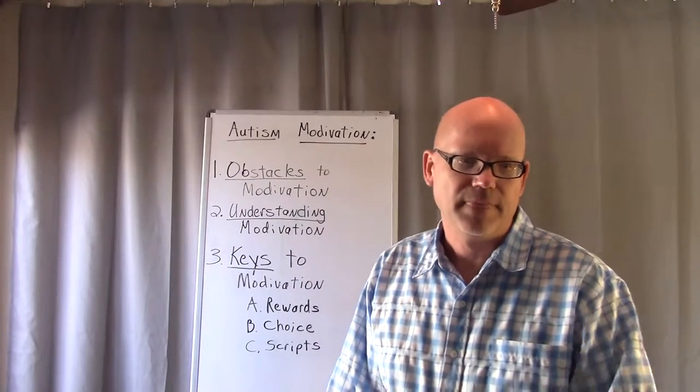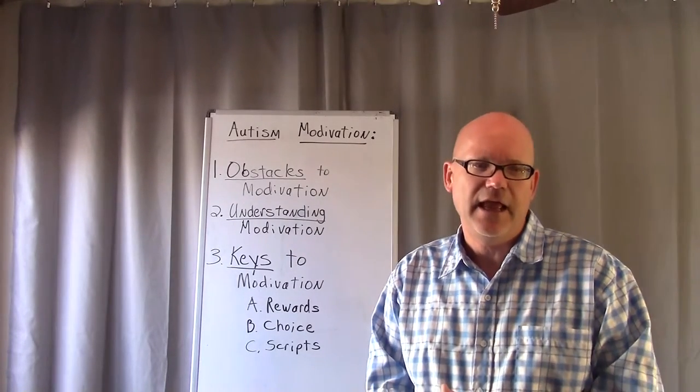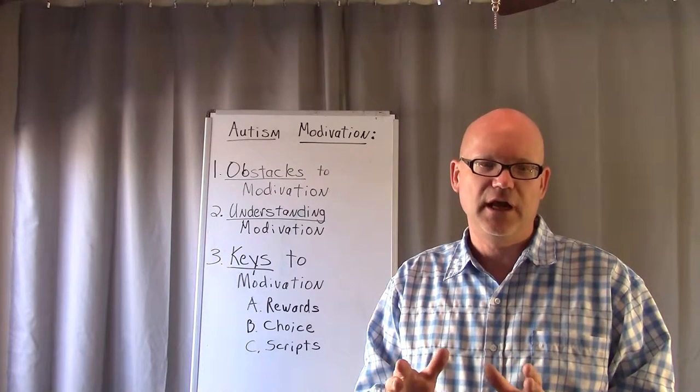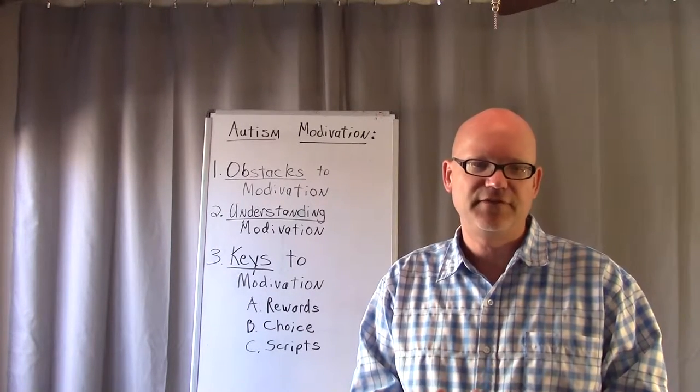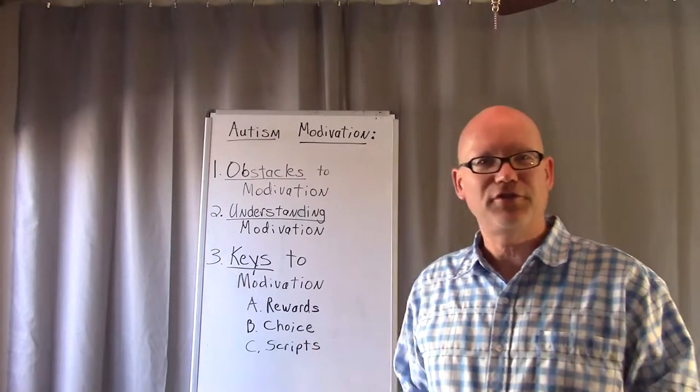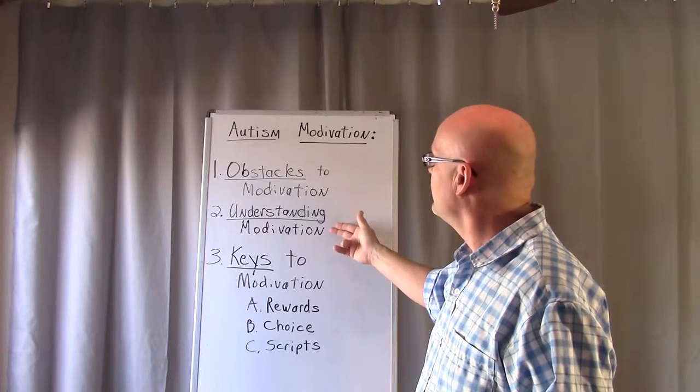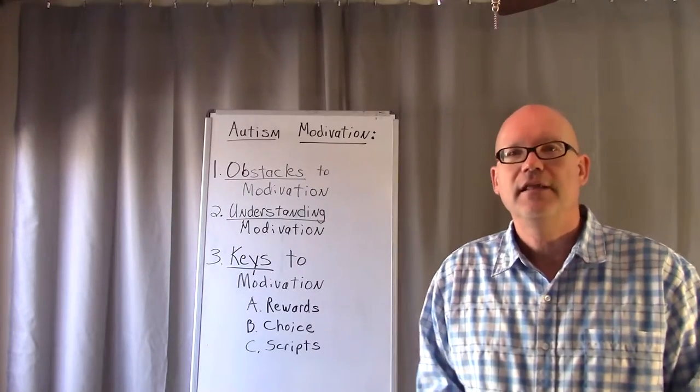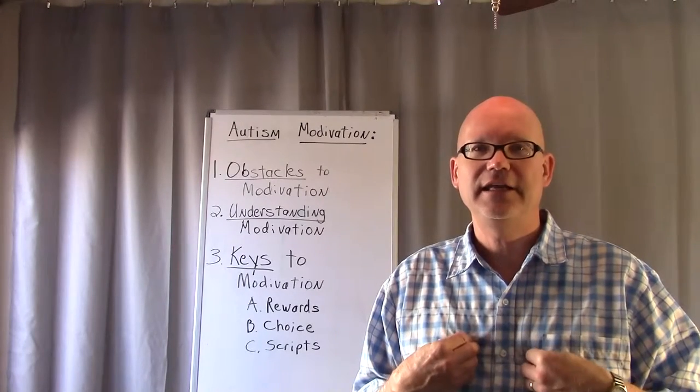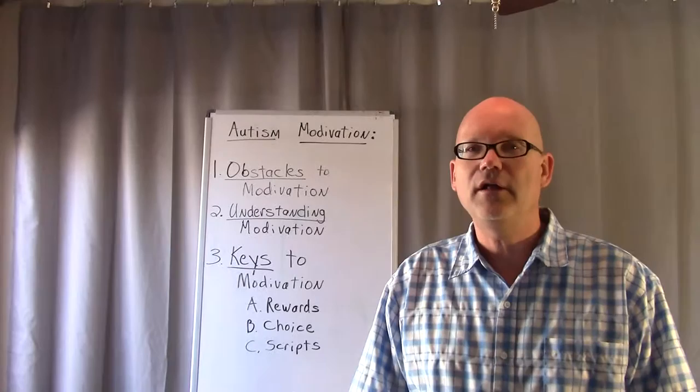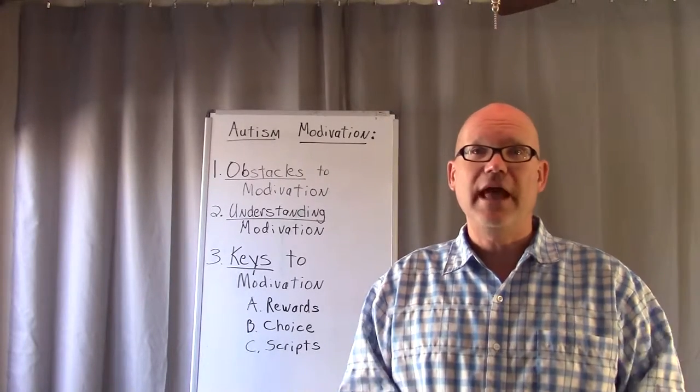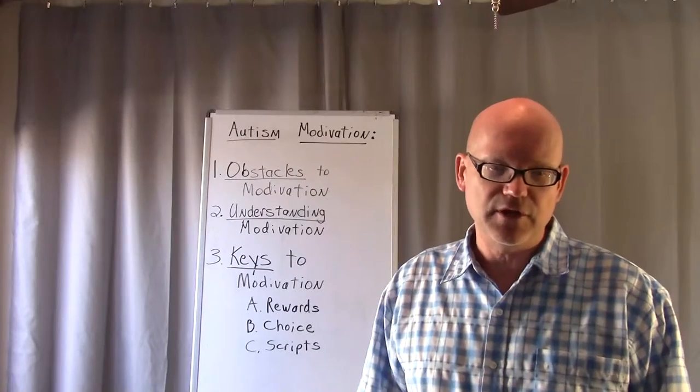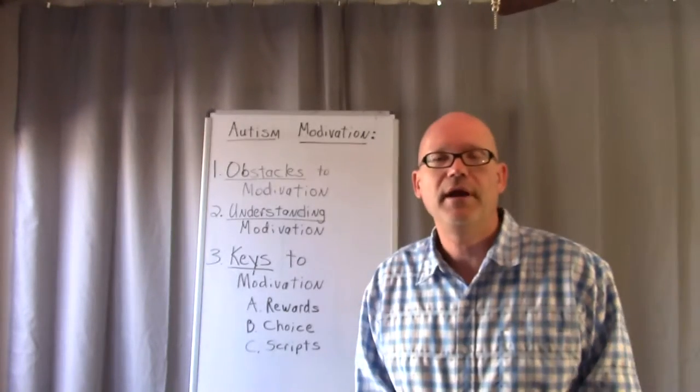So obstacles to motivation, we're going to move on to number two, understanding motivation. How can we understand motivation with someone that has Asperger's? Before you can really motivate someone with high functioning autism to do a specific task, you must understand what is their preferred way of communication. A lot of times I explain it: I speak Chinese, you speak English. How well do you think we'll be able to communicate? Not very good. Well, someone with Asperger's speaks Chinese and the neurotypical world speaks English, so you have to learn how to speak their language so they can understand.